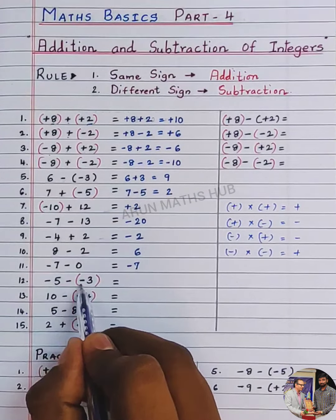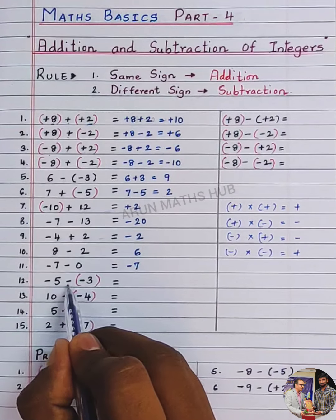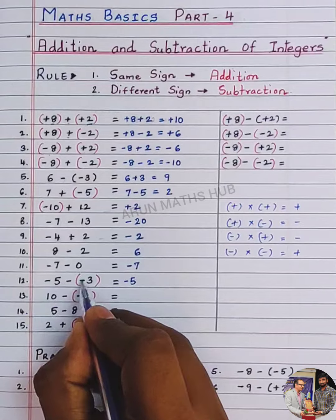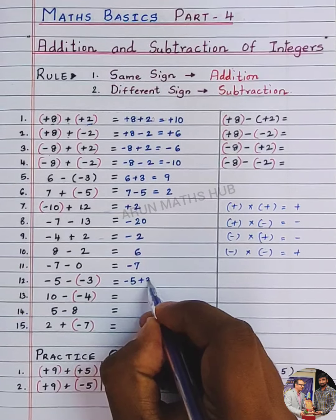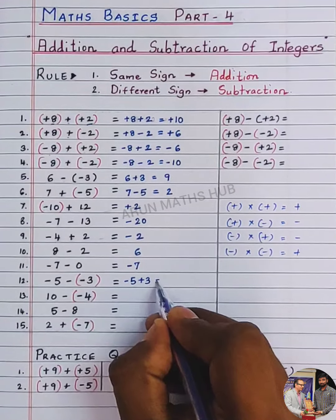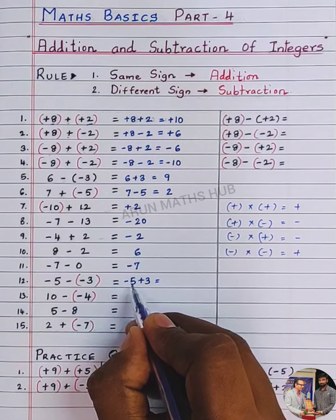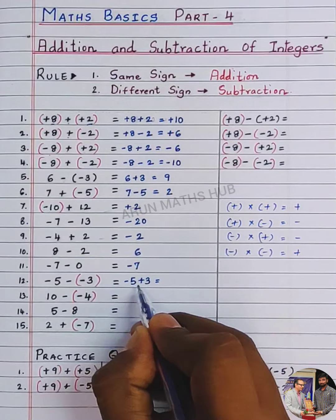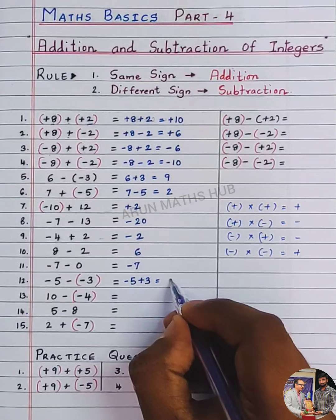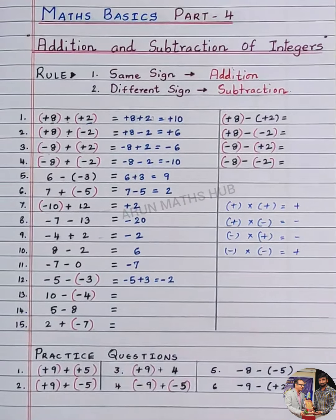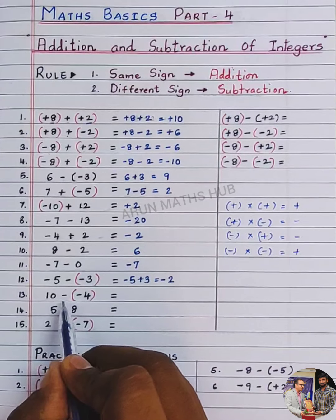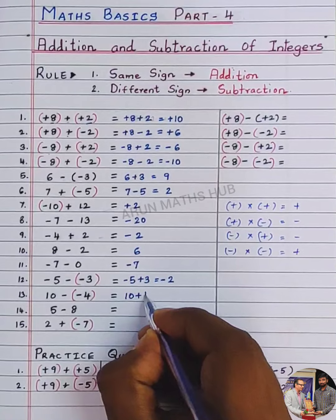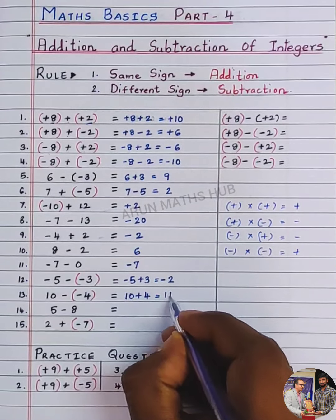Here, in between the numbers you have two signs — first, what you should do? You should do multiplication. Minus 5, minus into minus is plus, so minus 5 plus 3. You have one positive number and one negative number, so you do subtraction. 5 minus 3 is 2, bigger number's sign is minus, so minus 2. In between the numbers, multiply first: minus into minus is plus, so 10 plus 4 equals 14.